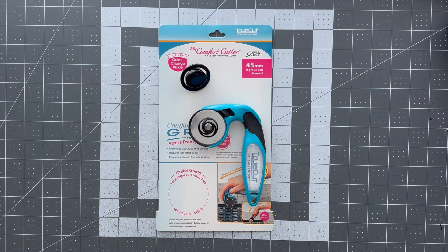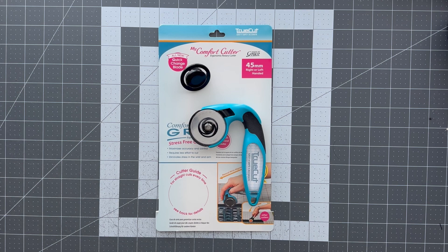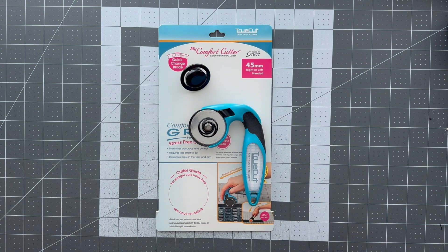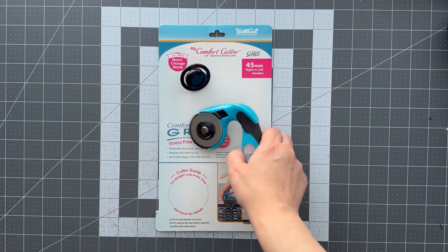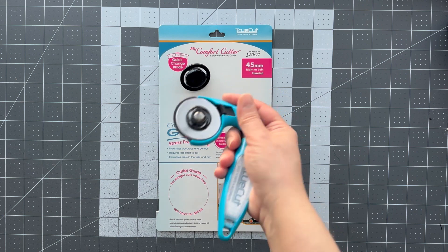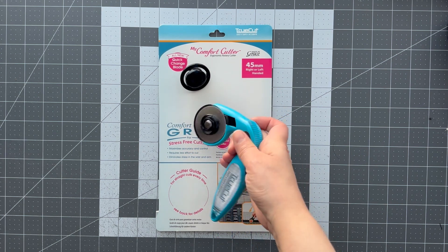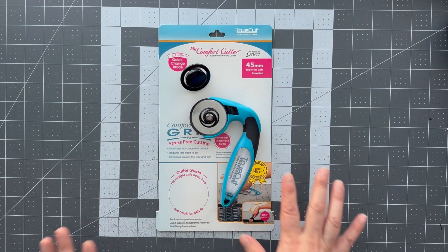This is the TrueCut My Comfort Cutter from Made by Grace. It's an ergonomic rotary cutter that is designed with your natural wrist alignment in mind. Basically it gets gripped into your hand like this so it makes for easy cutting.